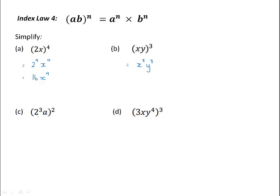In this example, the 2 inside the bracket is raised to the power of 3 already, and we're going to raise that to the power of 2 again. So it would look like this. And the a is also raised to the power of 2. We simplify this using the index law that says when we have a value raised to a power and raised to a power again, we multiply the powers. So this would simplify to 2 to the 3 times 2, or 2 to the power of 6.